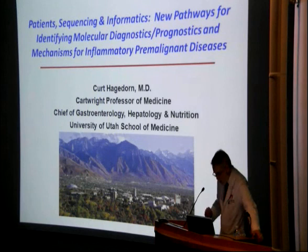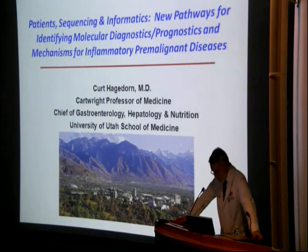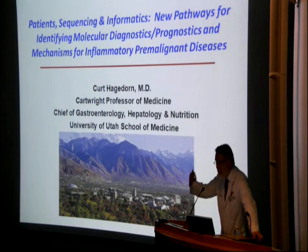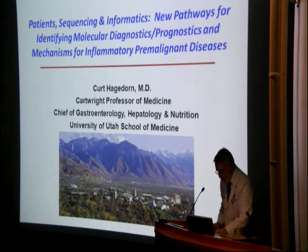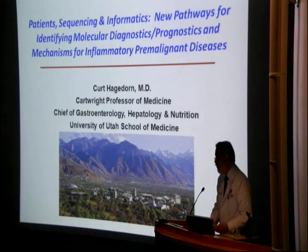Hitchings was an incredible American pharmacologist who shared the Nobel Prize in medicine and physiology with two colleagues in 1988. In the 1950s, he developed 6-thioguanine and 6-mercaptopurine for the treatment of leukemia. In 1957, he developed azathioprine, allopurinol, pyrimethamine, trimethoprim, and even acyclovir. George Herbert Hitchings was born on this day in 1905.